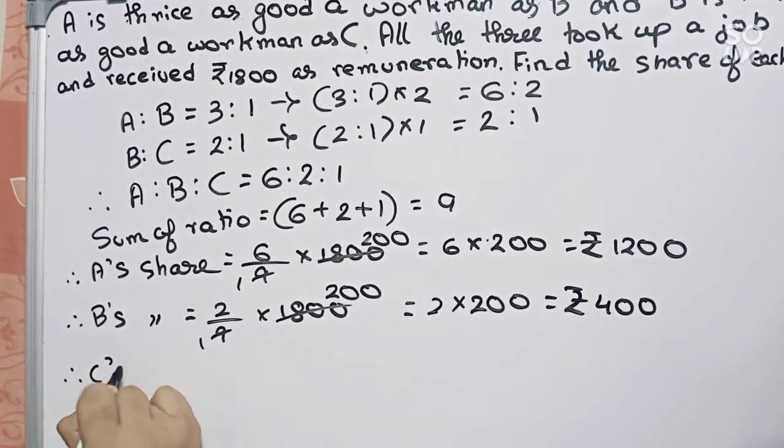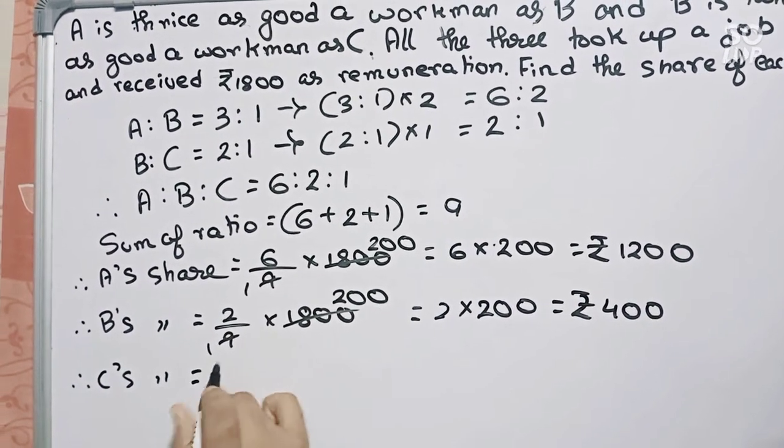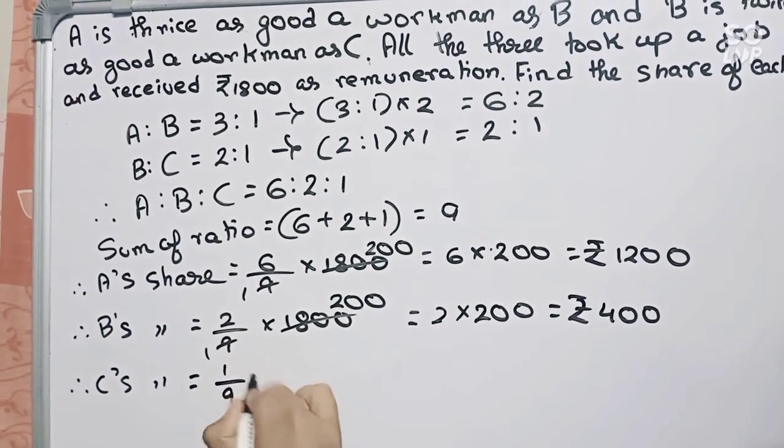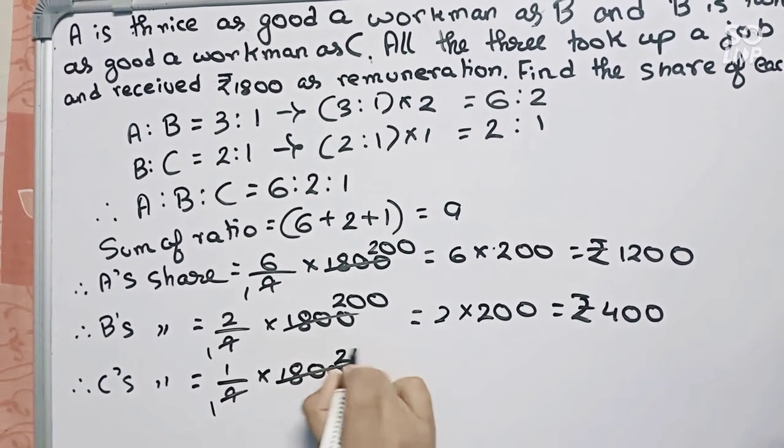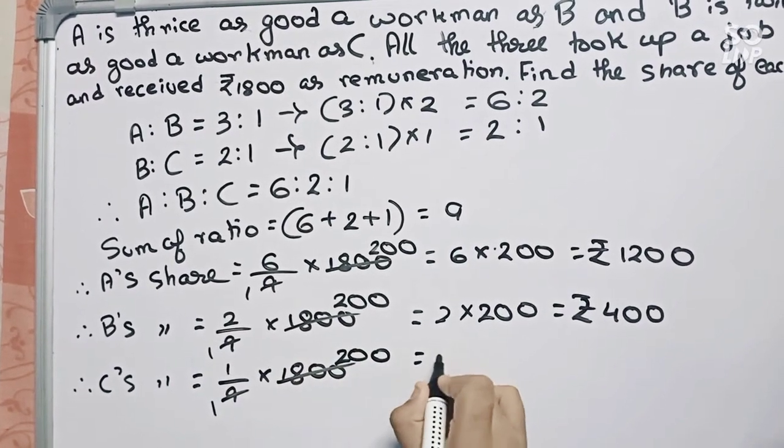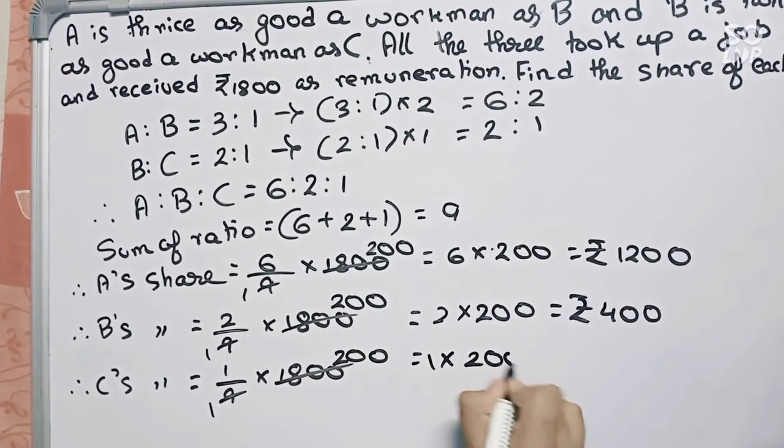Now C's share equals to 1/9 into 1800, which becomes 200. This should be 1 into 200, which is 200.